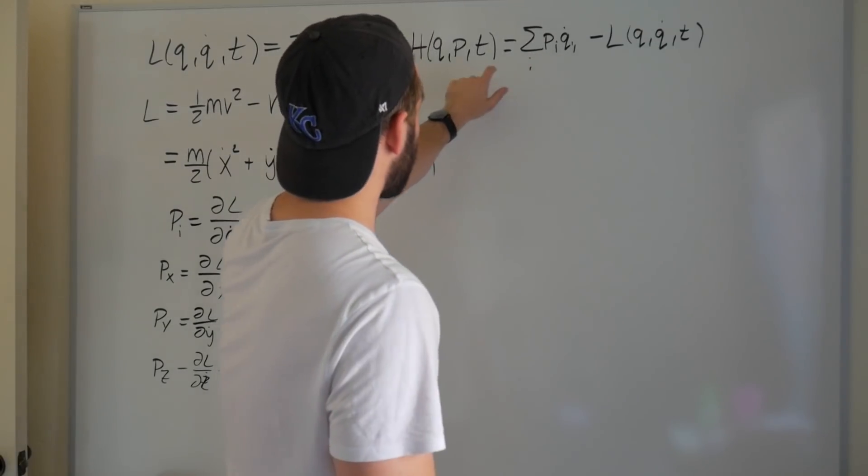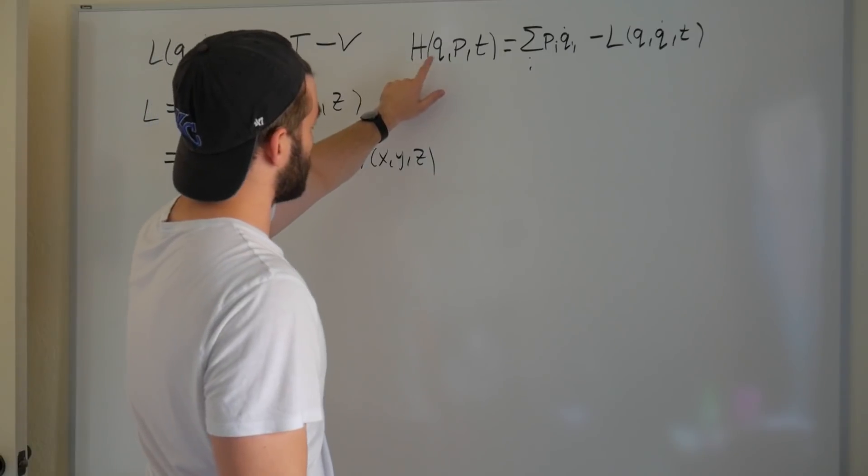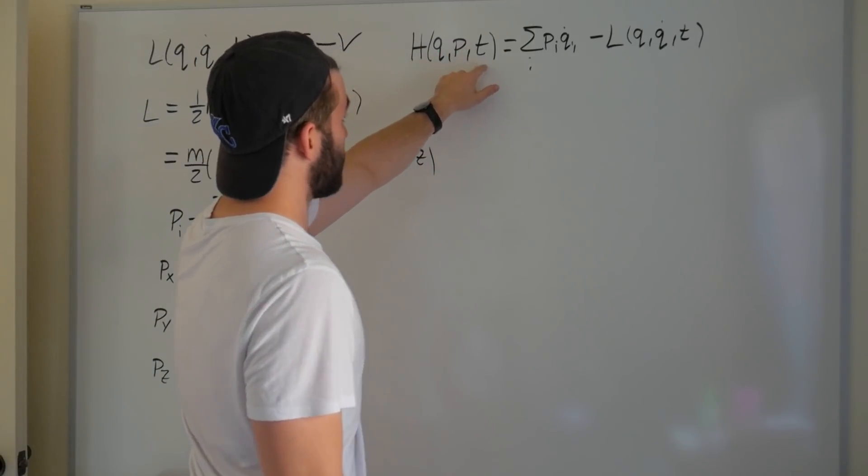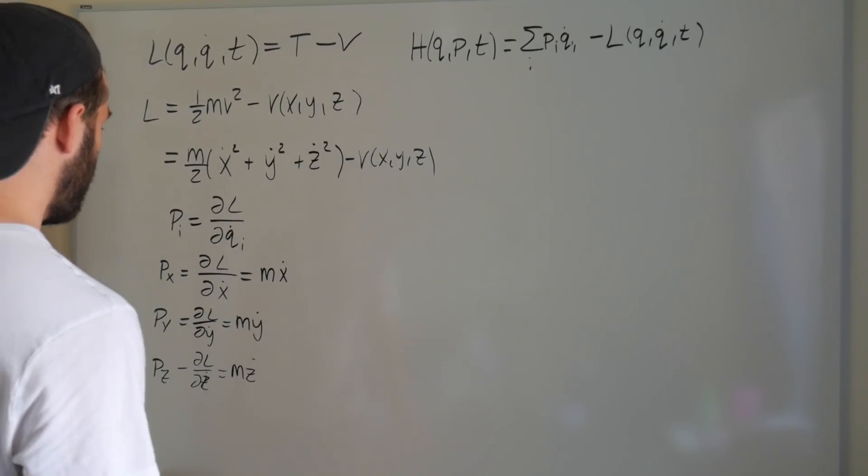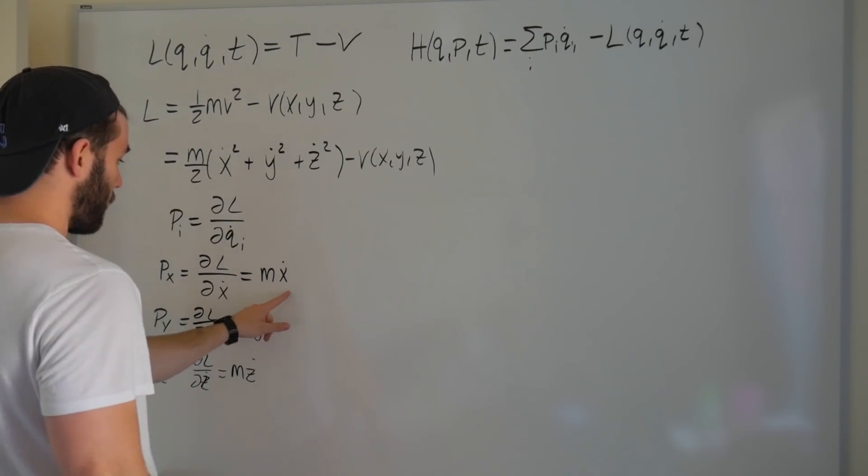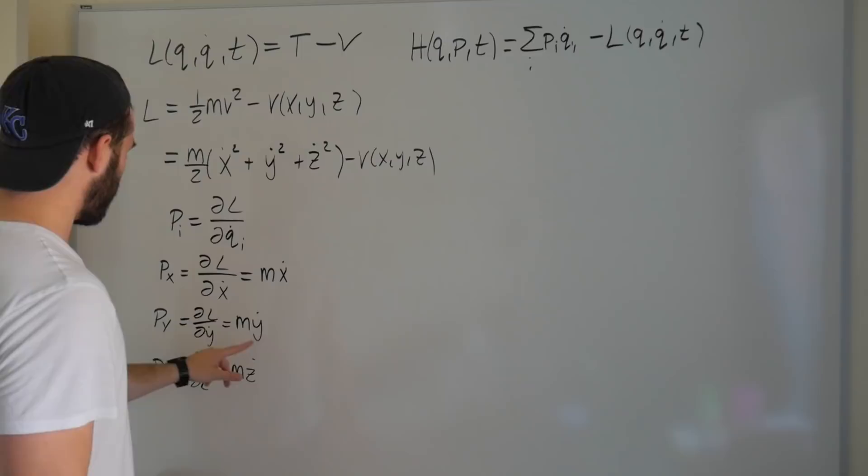It's momentum times generalized velocity. But we see this generalized velocity, but we don't actually want it to be a function of that. Well, actually, it can't be, right, because we're explicitly saying H only depends on q, p, and t. There's no room for q dots. Well, that's fine.